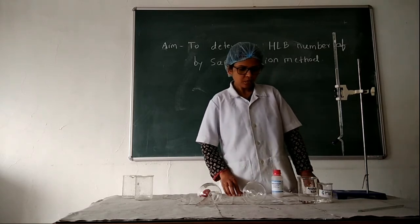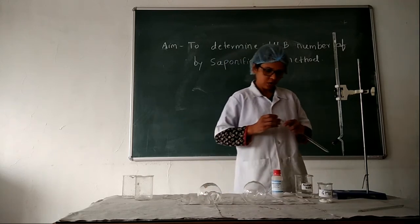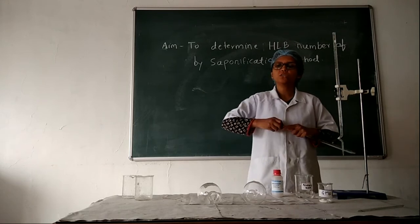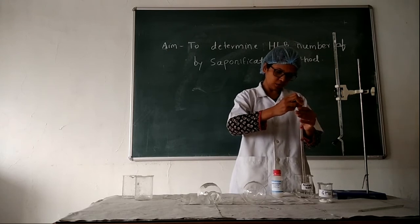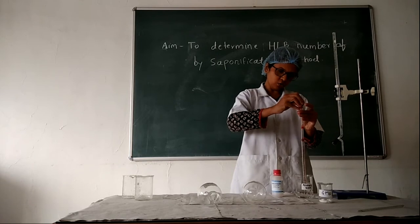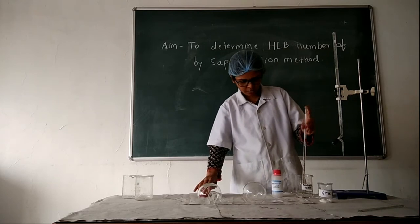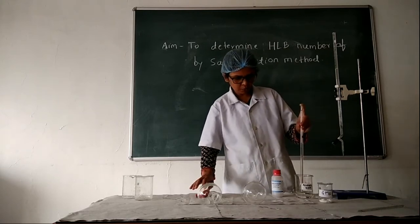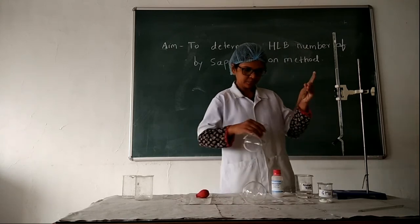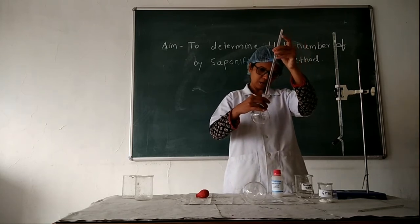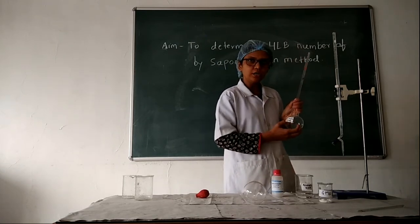Now, first of all, I am taking 15 ml of alcoholic KOH. To prepare alcoholic KOH, take 4 grams of KOH into 2 to 3 ml of water, then make up the volume to 100 ml with ethanol. Allow it to stand for 24 hours and then use the supernatant. I am now transferring this alcoholic KOH into the round bottom flask labeled as alcoholic KOH.